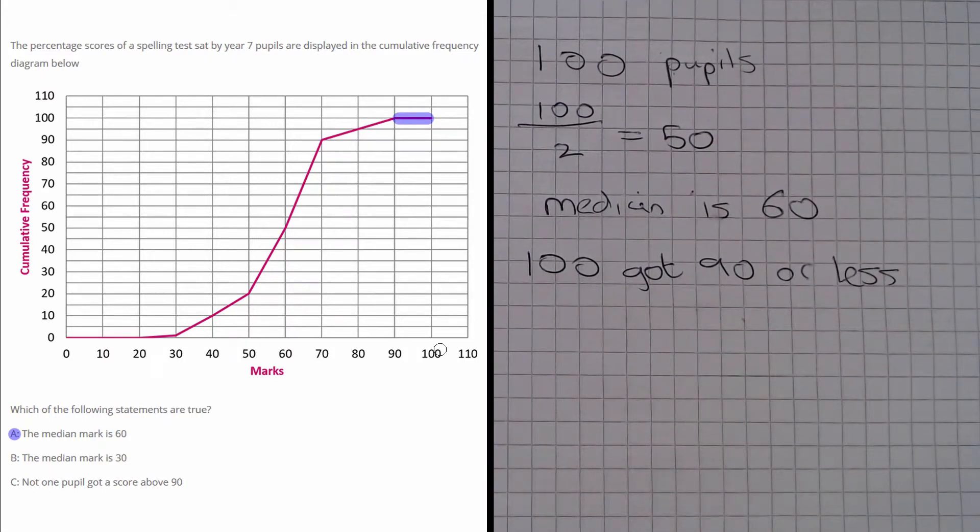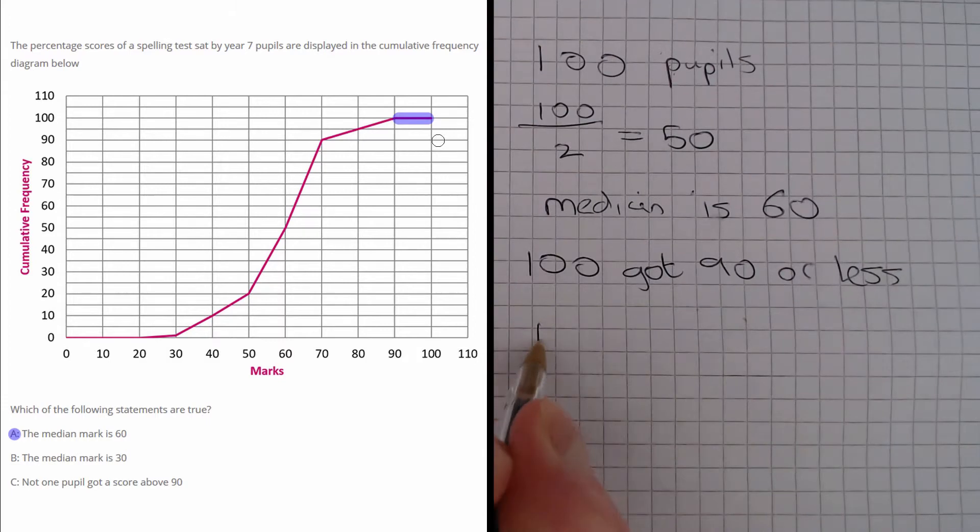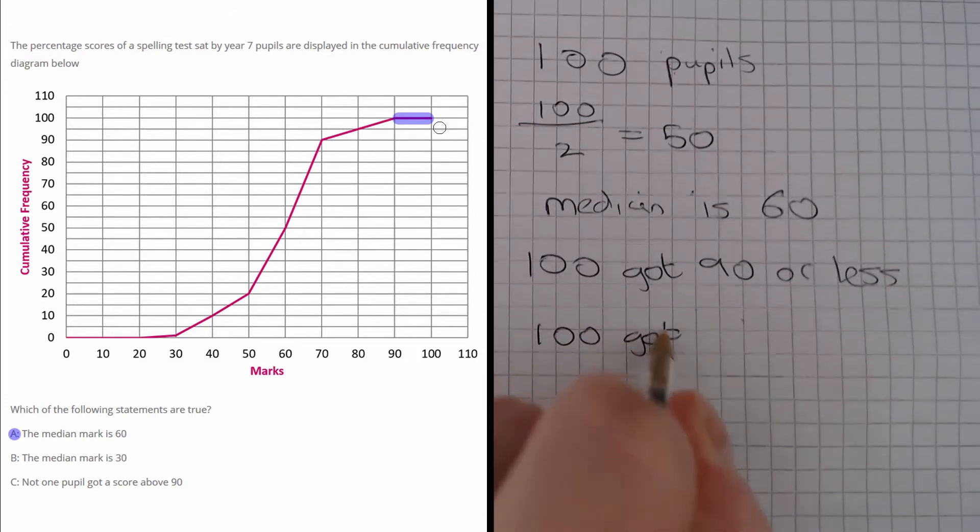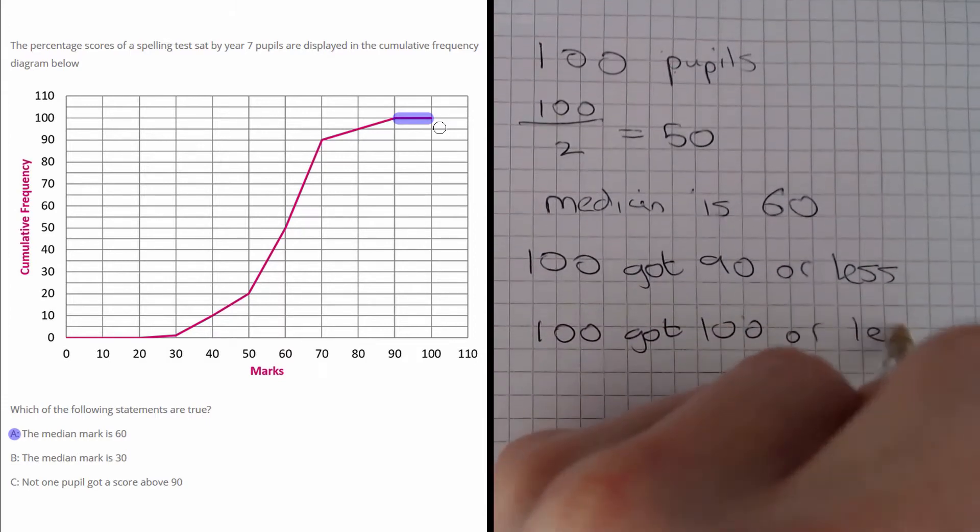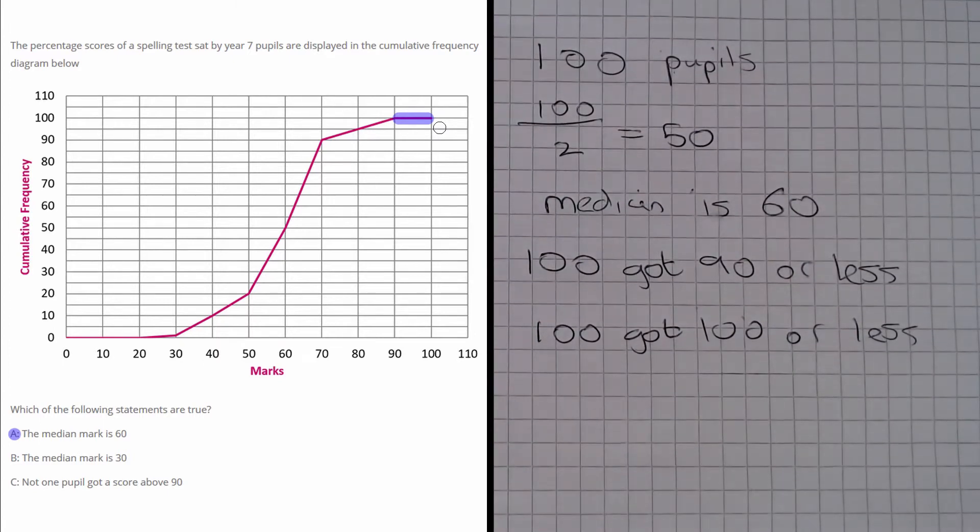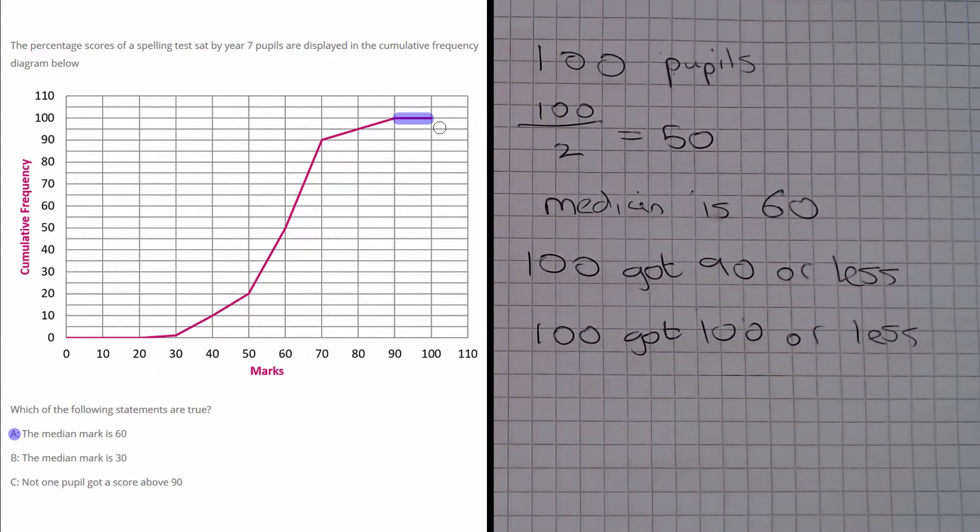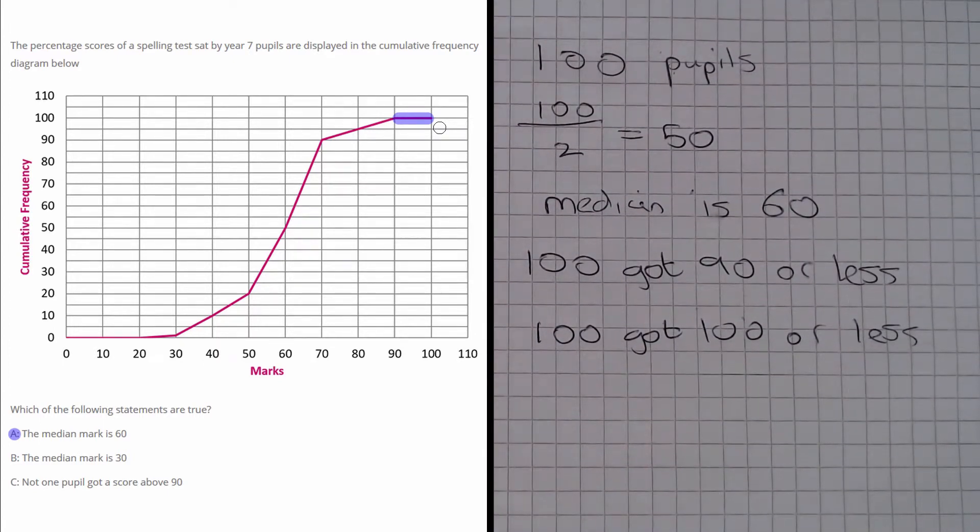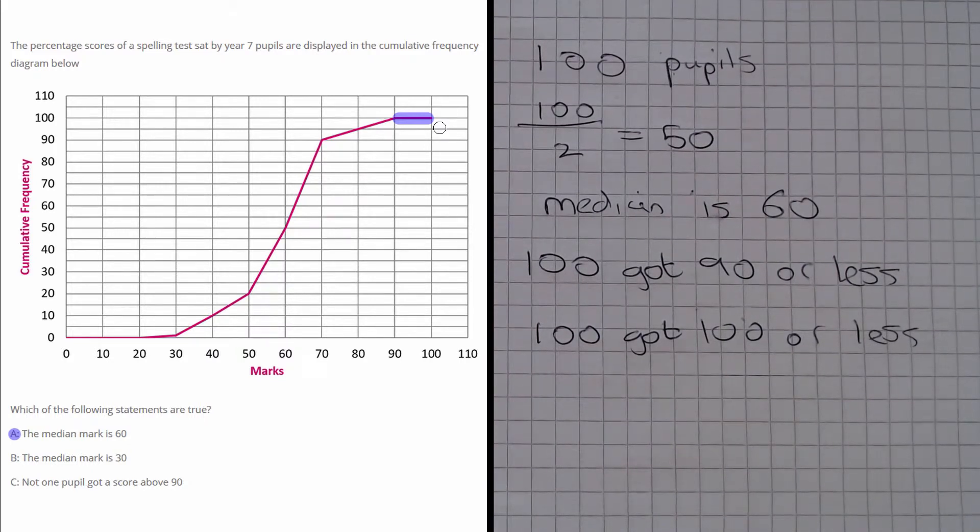But then if we go all the way to the end of the graph, which is obviously the maximum of 100 marks, we got that also 100 got 100 or less. So if 100 people got 100 or less, and the same 100 people also got 90 or less, then clearly no one got between 90 and 100.